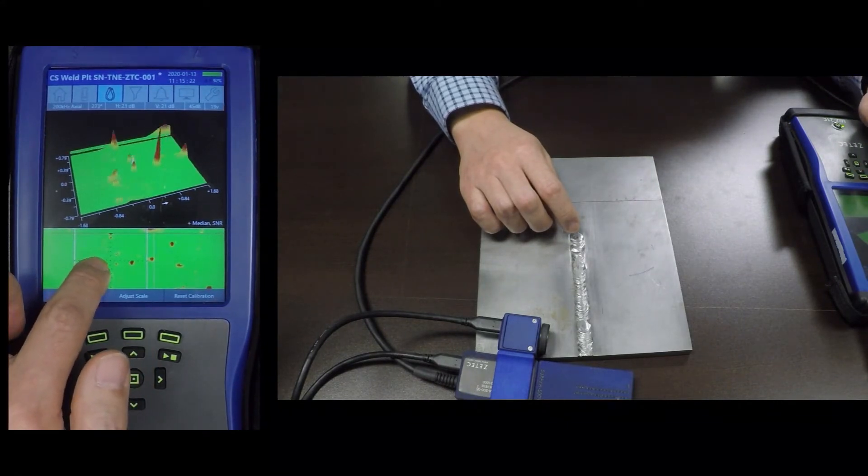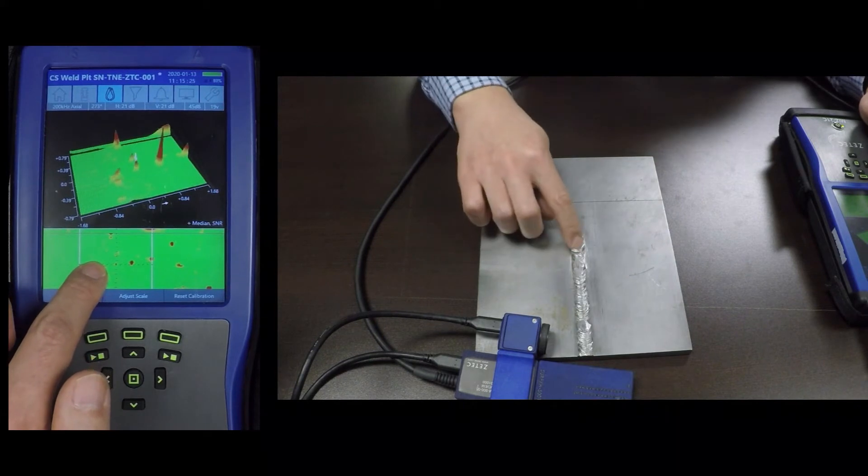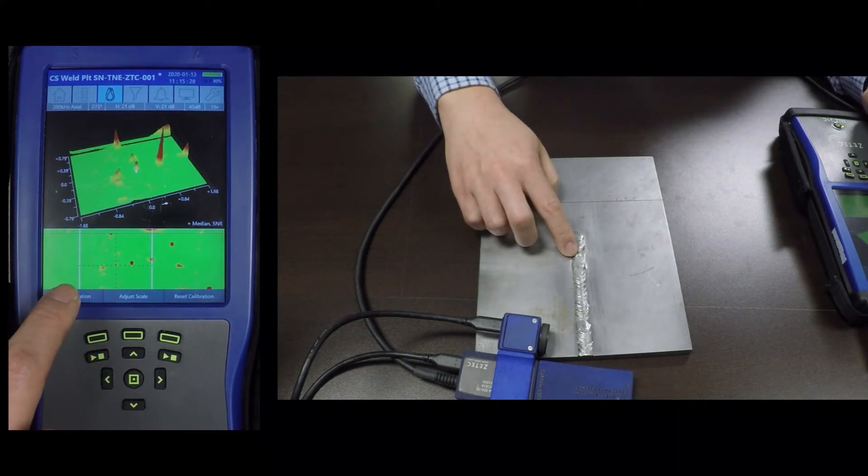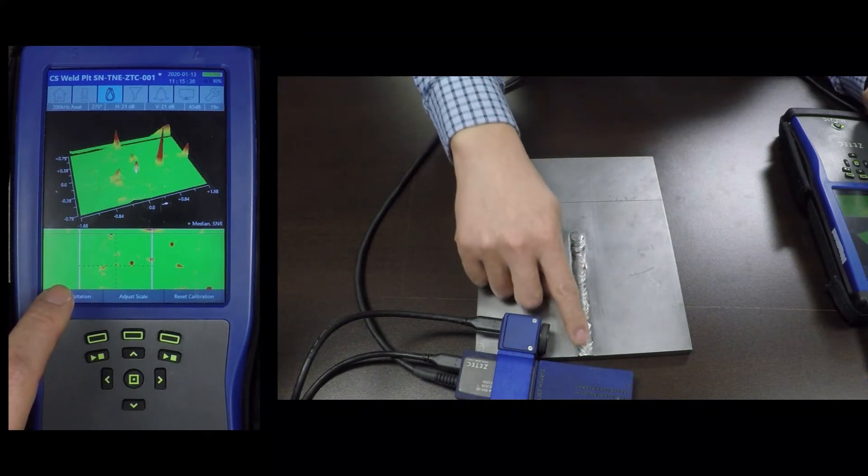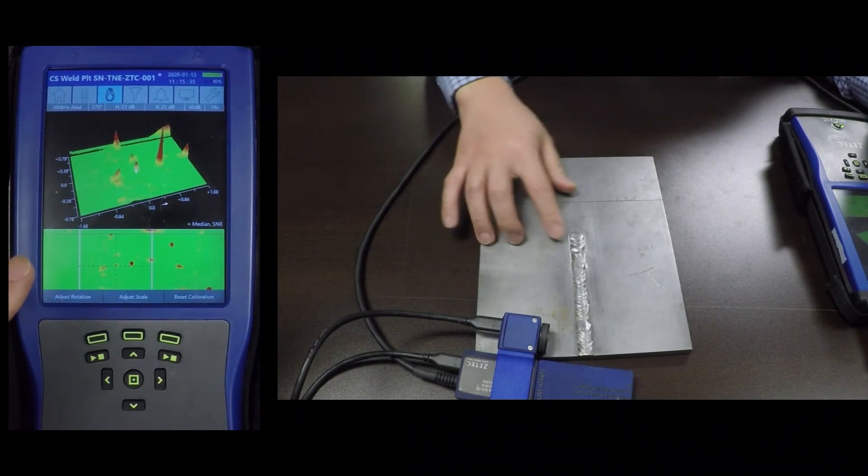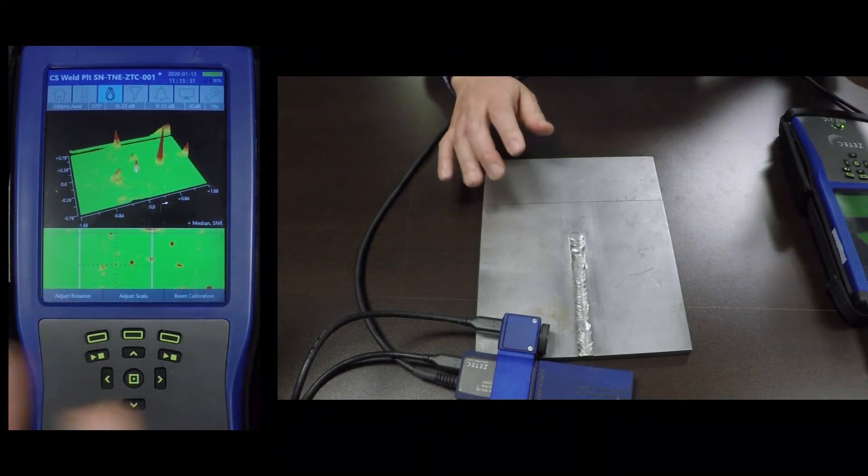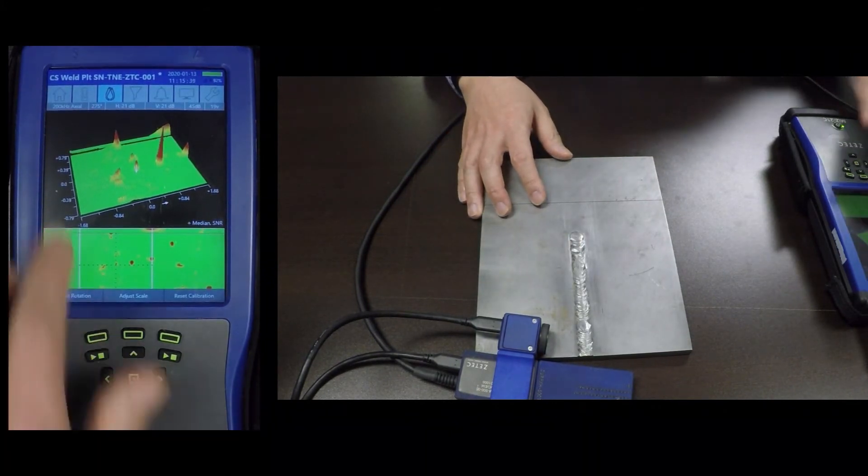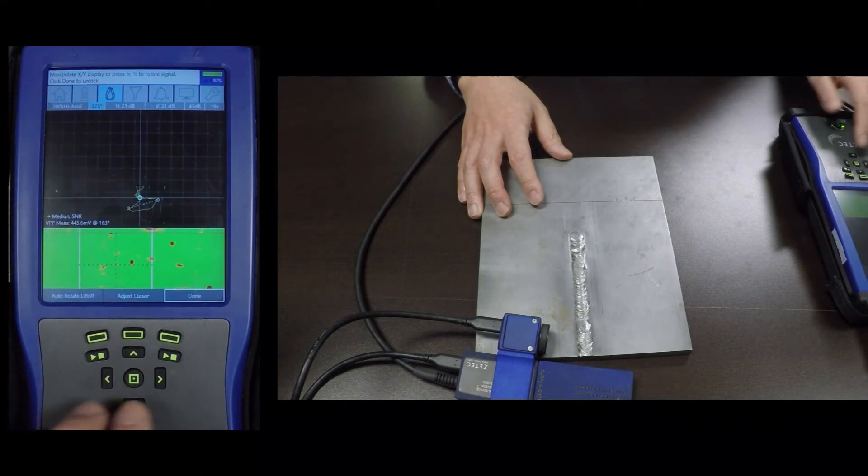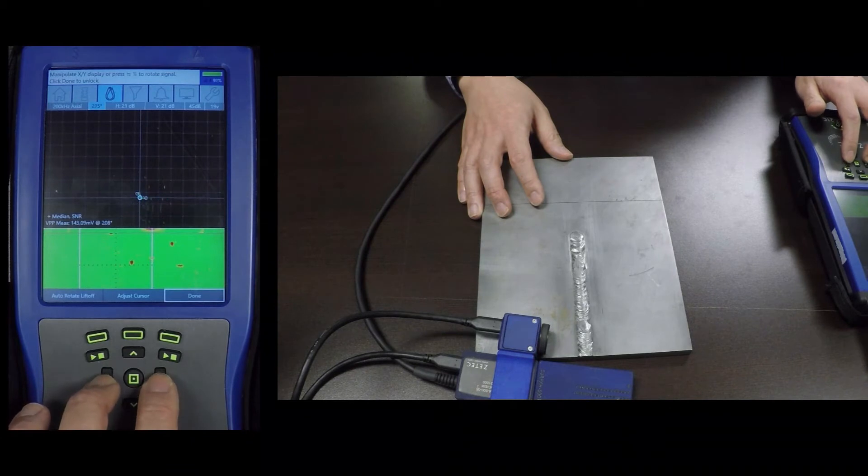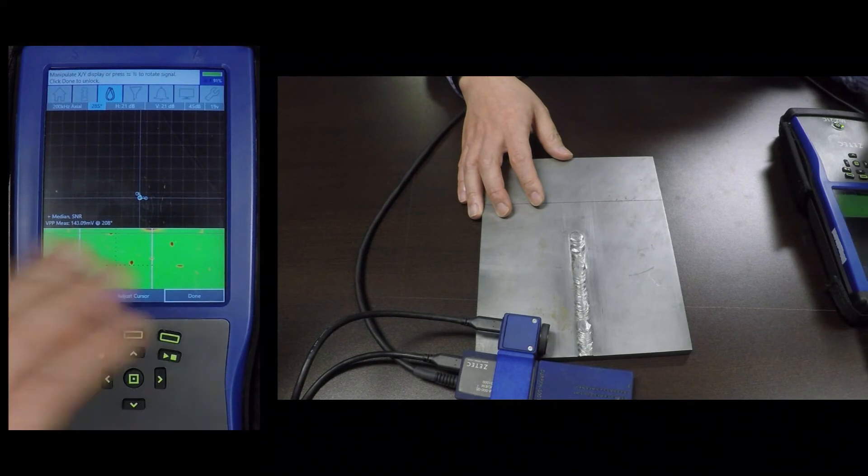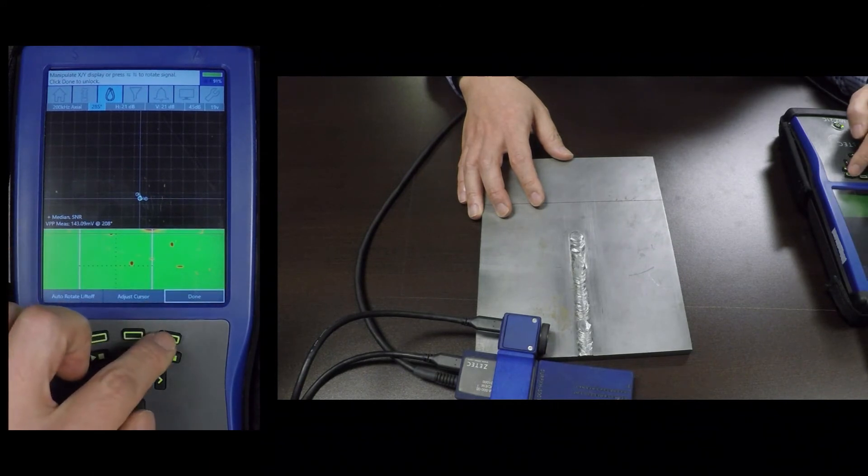And then there's some other signals here you can see, but those are mainly due to the unevenness of this weld. And they're liftoff signals. And sometimes they're hard to filter out, but you can use filters or you can adjust your rotation to kind of filter those out or kind of get those reduced.